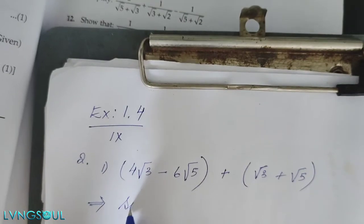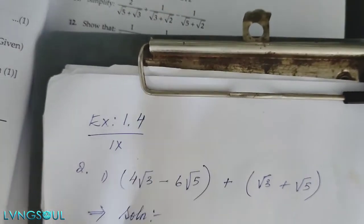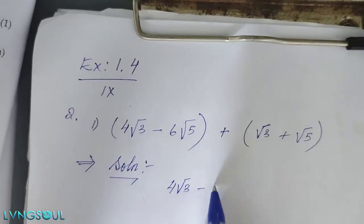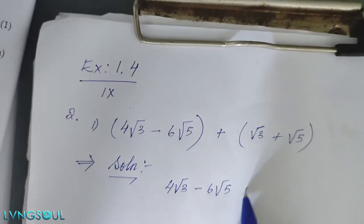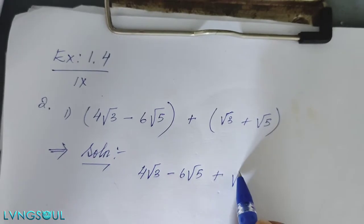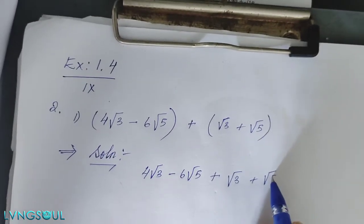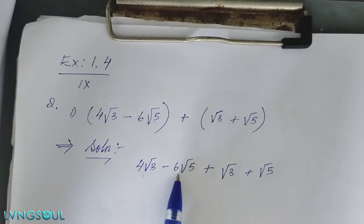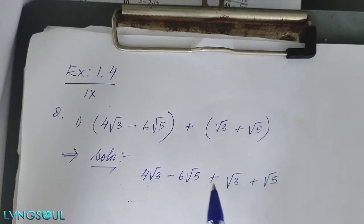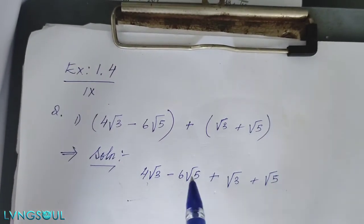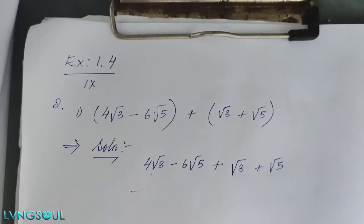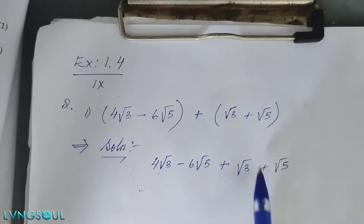Solution: 4 root 3 minus 6 root 5. We put it in a bracket. Assigning and combining like terms. Root 3 plus root 5. So: 4 root 3 minus 6 root 5 plus root 3 plus root 5.